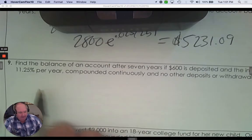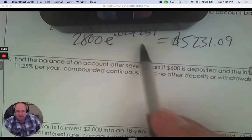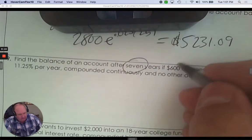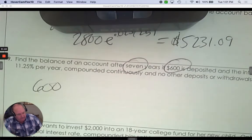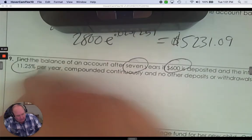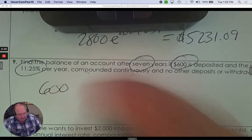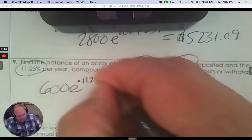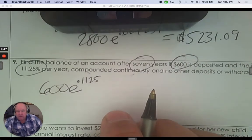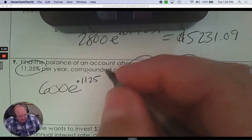Here we go. Find the balance of an account after seven years. $600 was deposited and the interest rate is 11.25%. That's a great rate. Compounded continuously. That's E. As a decimal, that'd be 0.1125. Seven years. Let's go.